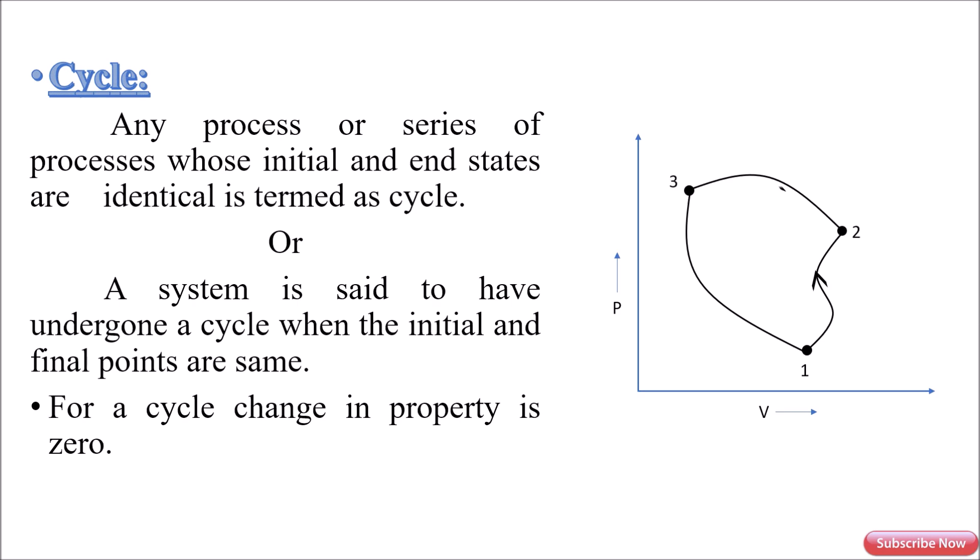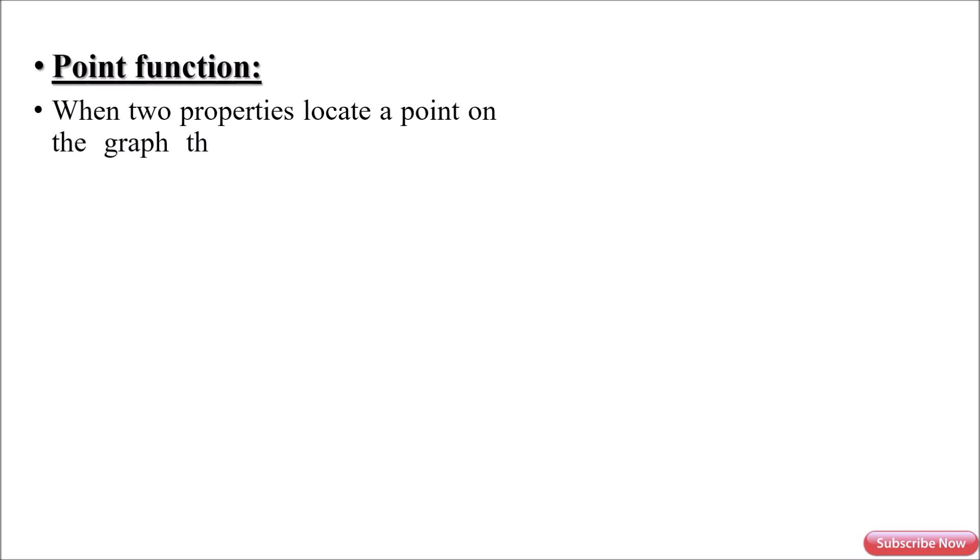Next, we will see the difference between point function and path function. Point function: when two properties locate a point on the graph, then those properties are called point function. Examples include pressure, temperature, volume, etc.